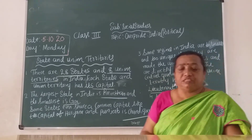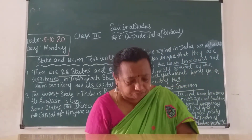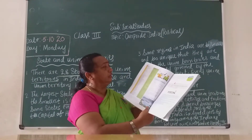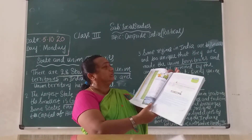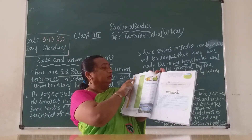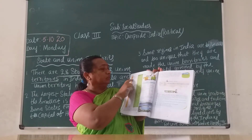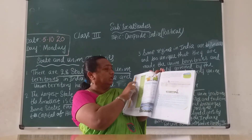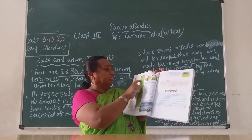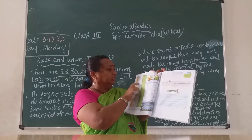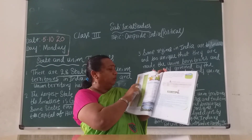Every union territory has its lieutenant governor. Look at the picture children — take out your book, page number 38. Here are the states and their capitals. Andhra Pradesh — Hyderabad. Arunachal Pradesh — Itanagar. Assam — Dispur. Bihar — Patna. Chhattisgarh — Raipur.